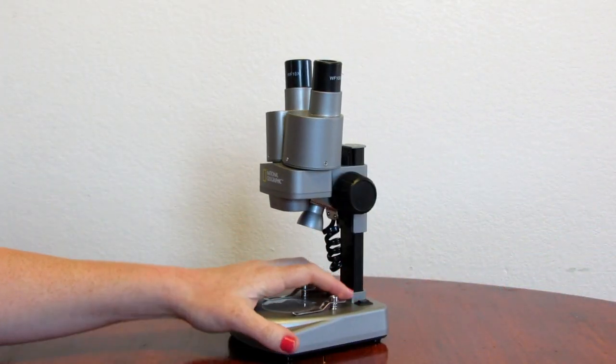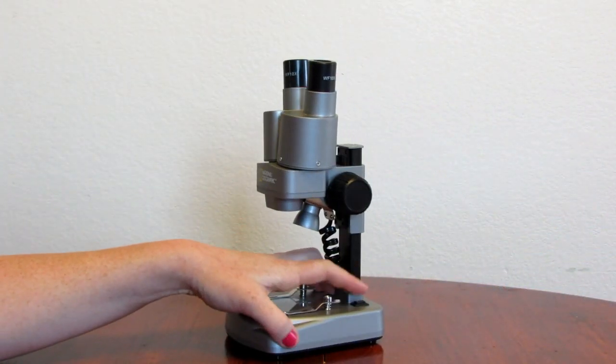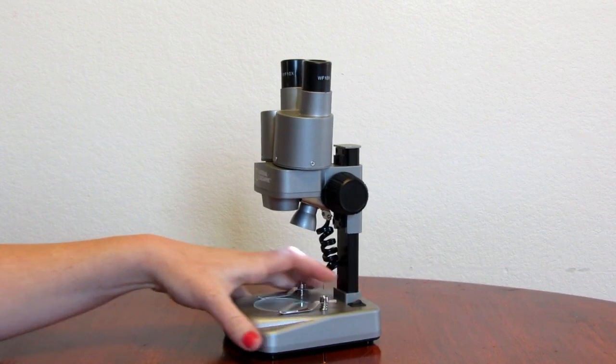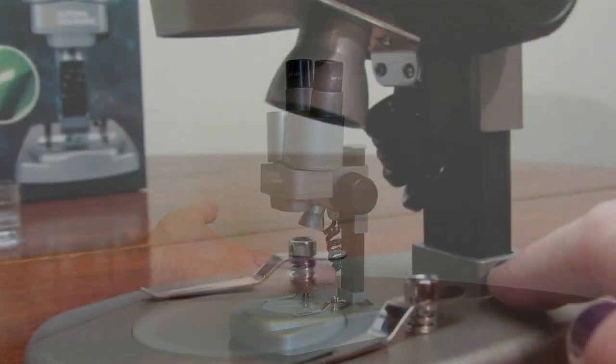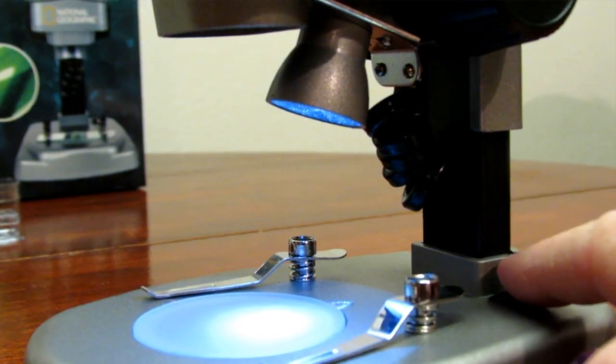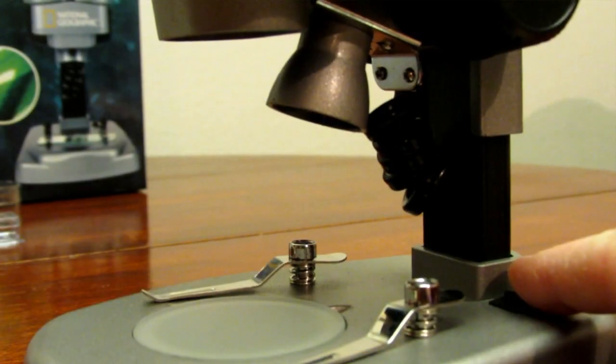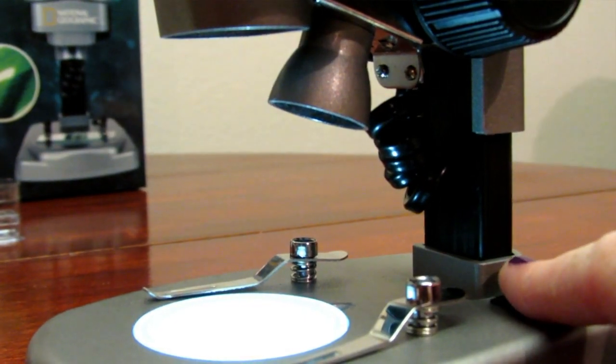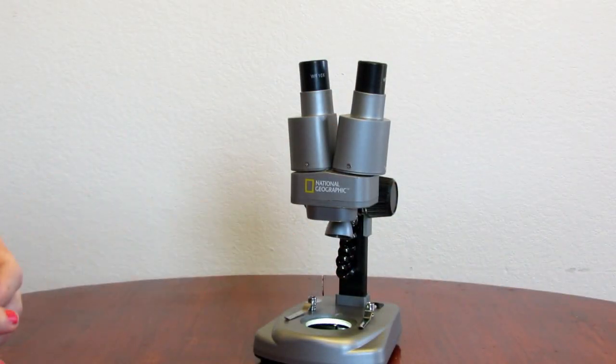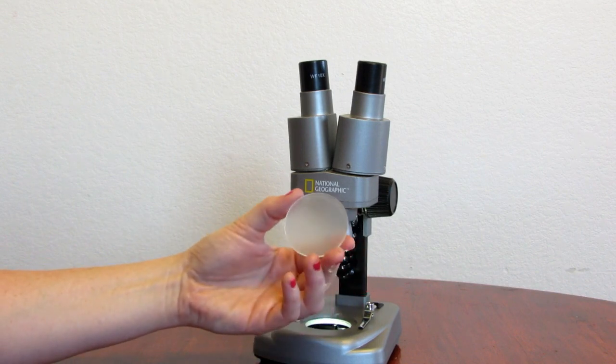On the other side is where you have your light switch, and you can see the light from above so you can visualize the specimen, or you have it from below with this condenser lens right here.